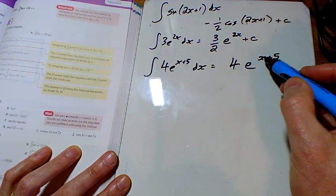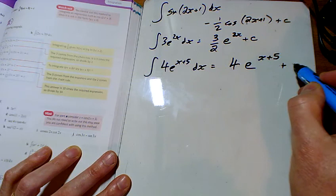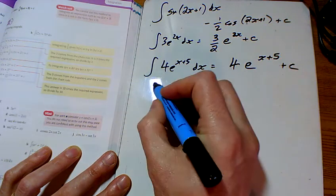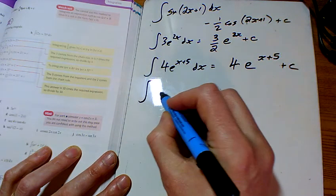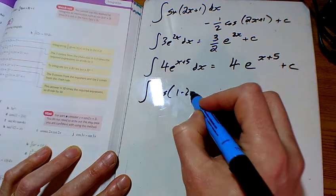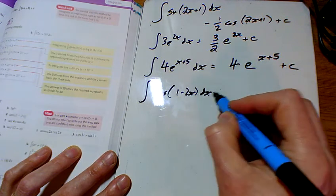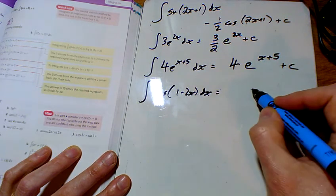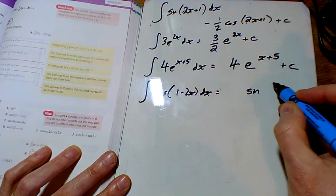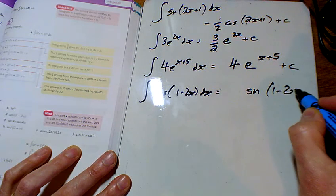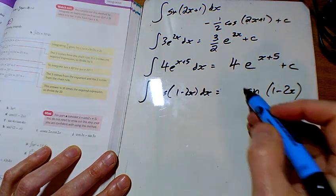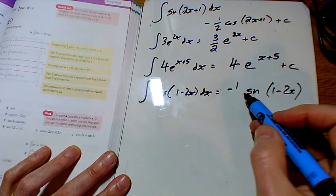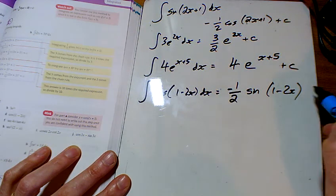For D, I'm doing cos of 1 minus 2x. Well, cos integrates to give a sine, the bracket always stays the same, and I'm going to divide by the number of x's, so I'm dividing by minus 2. So I've got minus a half there, minus a half the sine of 1 minus 2x.